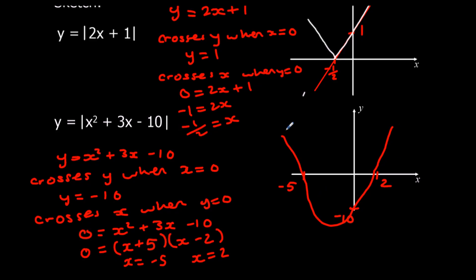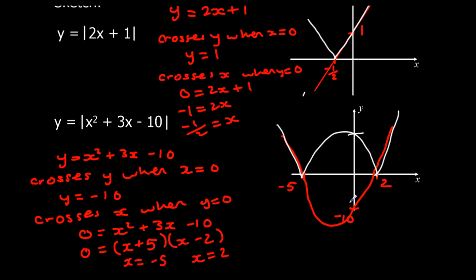For the modulus graph of the quadratic, the two positive areas stay the same. But the negative area, including the minimum point at y = −10, reflects back — the modulus of negative 10 is positive 10 — so it forms this W-type shape.